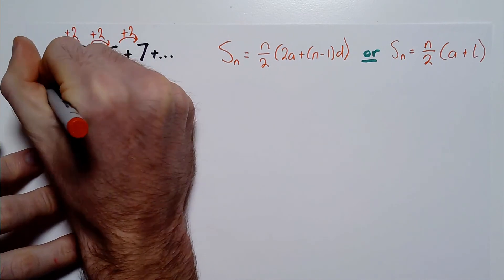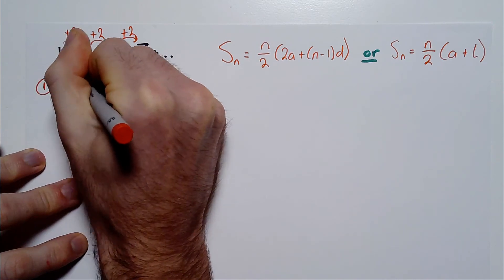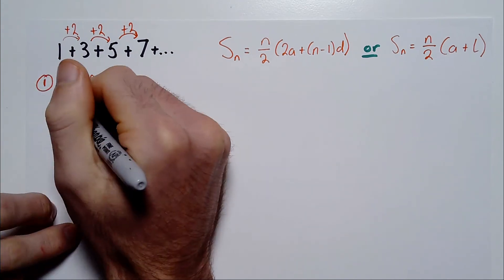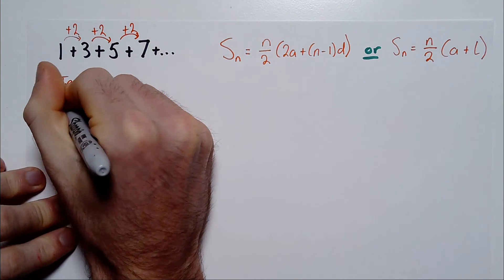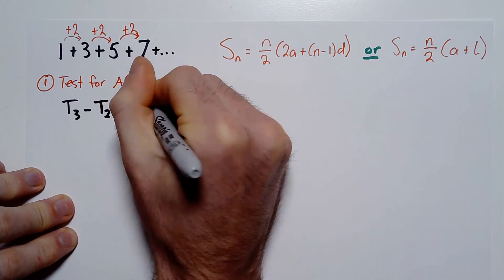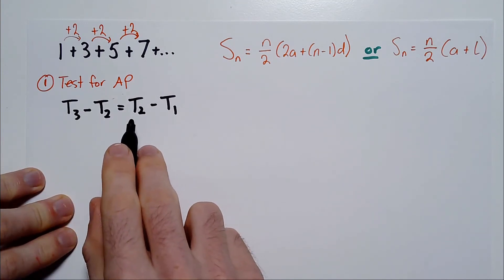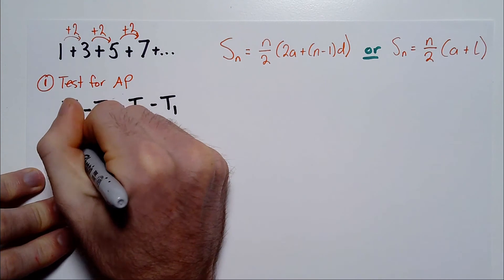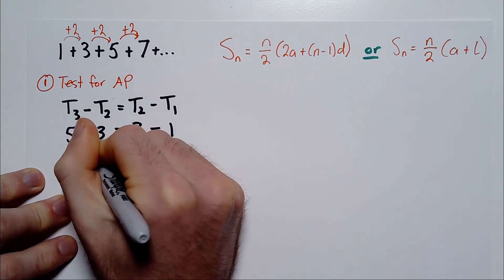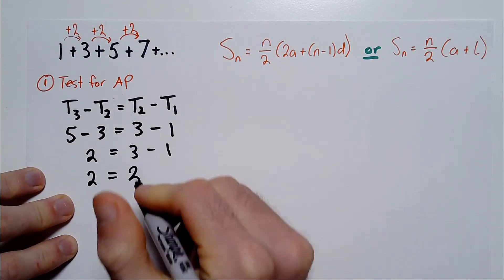Just to be clear, the first thing you should always do in a test is to state the test for an AP. The test is simply this: you want to test across 3 terms. Is T3 minus T2 equal to T2 minus T1? We want to know that the difference between the third and second number is the same as between the second and first. In this case, 5 minus 3 equals 3 minus 1. Well, 5 minus 3 is 2 and 3 minus 1 is 2 — so that is true.